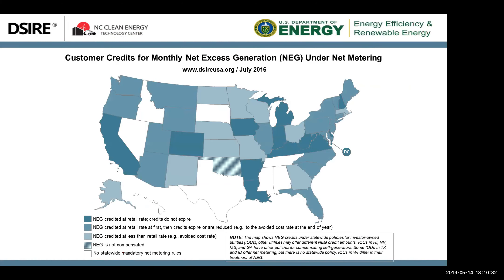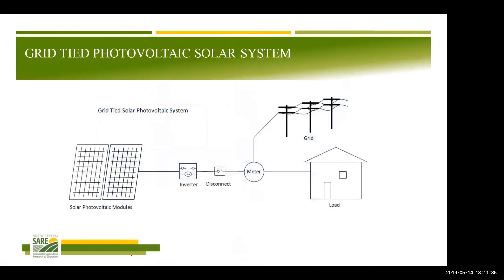What is the value of that excess generation? The dark-colored states credit at retail rate — you get full retail rate or can roll it over. As the color gets lighter, the value decreases. Some states give credits that reduce over time; lighter blue indicates less than retail rate, possibly avoided cost. Oklahoma doesn't compensate at all — they essentially zero out your excess generation. Some states have no mandatory rules, so it depends on the utility.